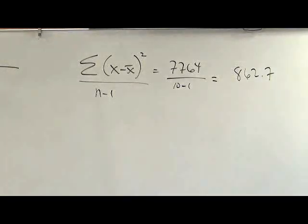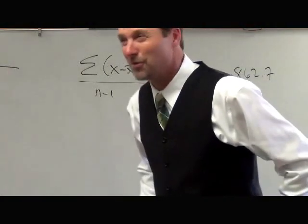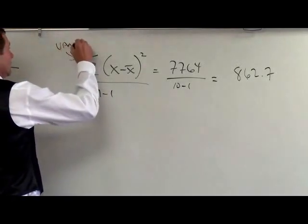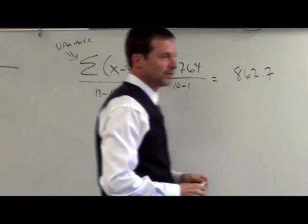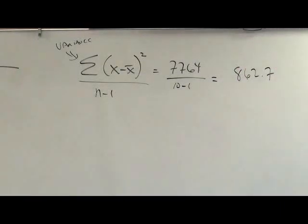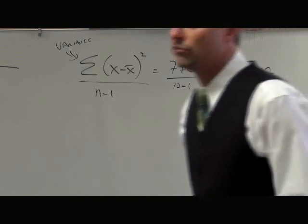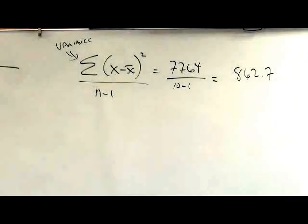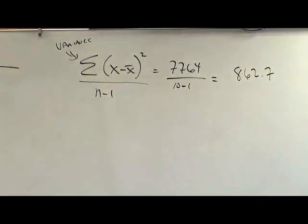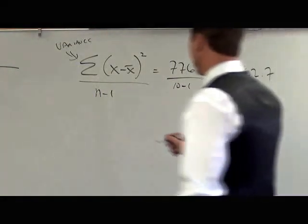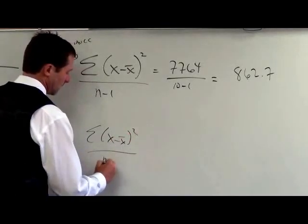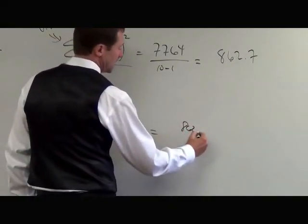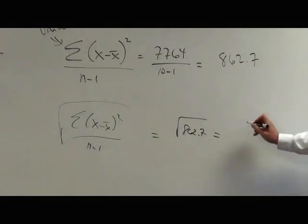Is that the variance? Yes! Finally! Has anybody heard of variance before? The variance — this is the formula for the variance. So 862.7 is the variance. It's not something we're going to use right now, but it is in our formulas later. We use the variance later. Right now, it's just the typical difference from the mean squared.